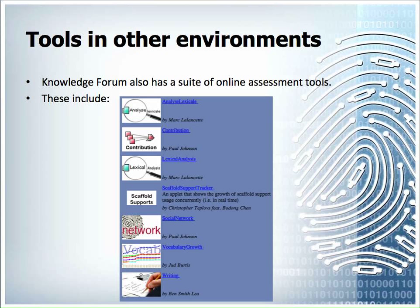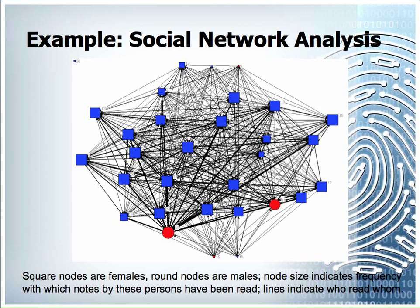To give you an example of one of the tools: by downloading information from Knowledge Forum we can do a social network analysis. The squares and circles are nodes and they represent students. Square nodes are female — as you can see, my class was mostly female when I did this — and round nodes are males. The size of the nodes tells you how often the notes these people have contributed have been read. Most people have contributed quite a few nodes and are pretty even in size; however, some people have not, and you can see me waggling my cursor over a couple who haven't contributed as many. Up in the corner is someone who hasn't done much of anything — that's a student who dropped out of the class.